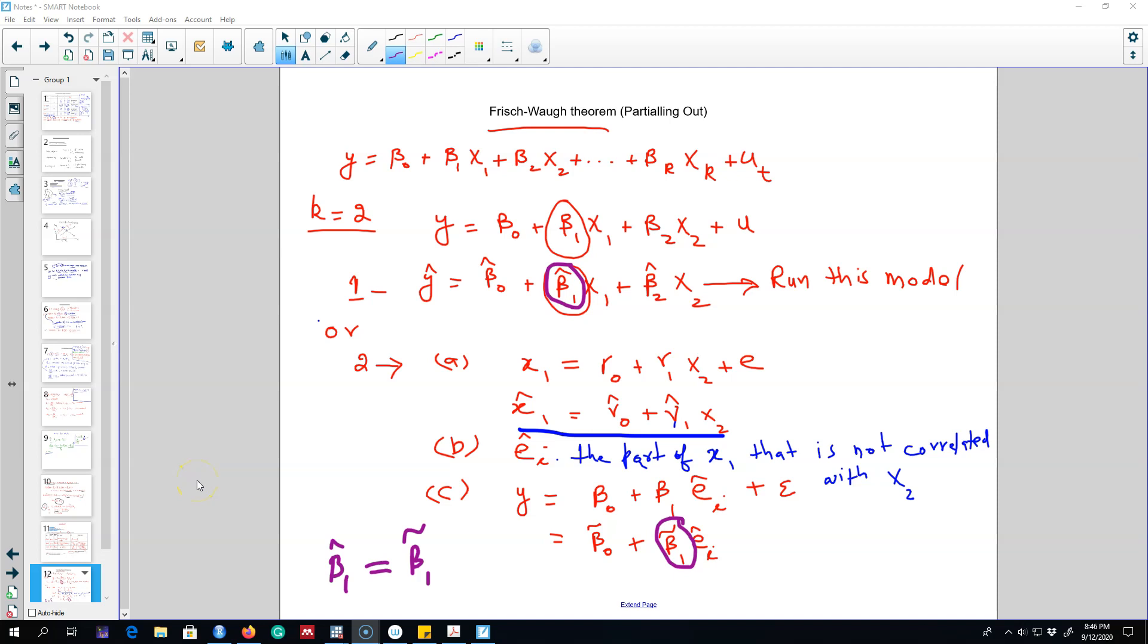In the last video I talked about Frisch-Waugh-Lovell theorem and partialing out the effect of x1 from x2. So essentially we were partialing out the effect of x1 from x2. Now the question is what happens if we omit this variable x2 from our regression model.